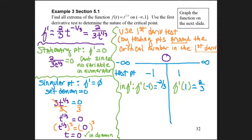I need to test them in the first derivative, so f'(-1) gives me negative 2/3, and f'(1) gives me positive 2/3. Now I'm ready to look at those results and decide whether I have a relative max or min.